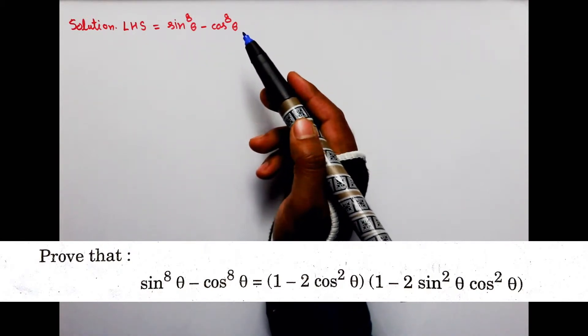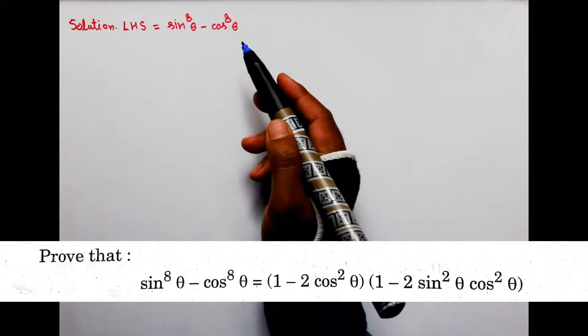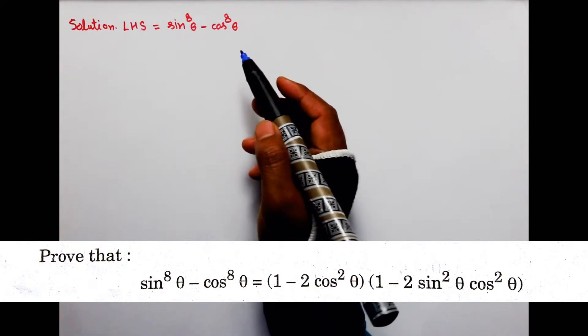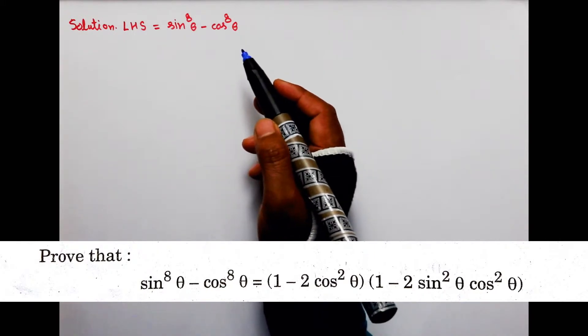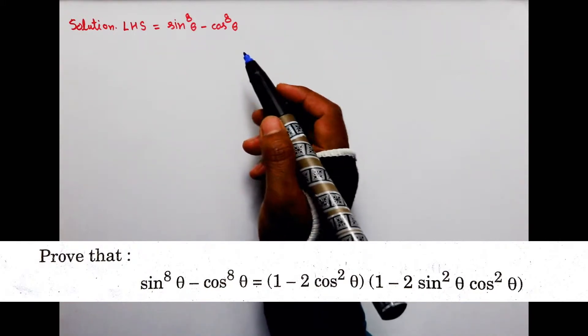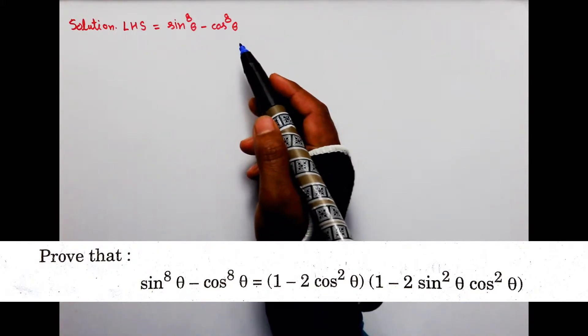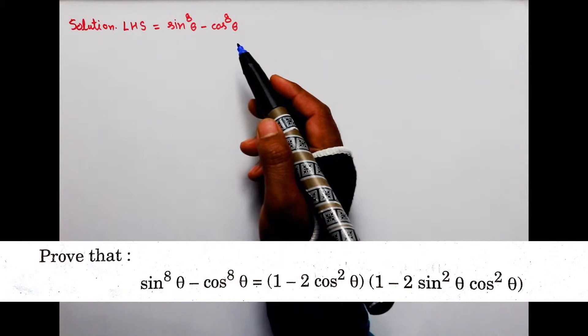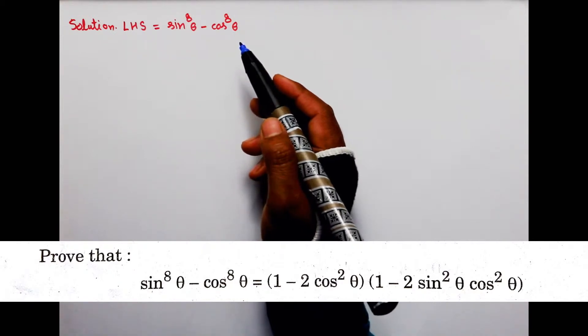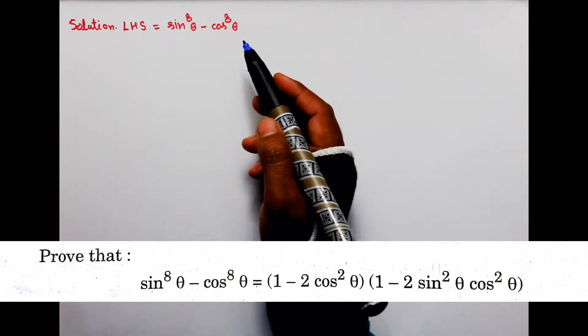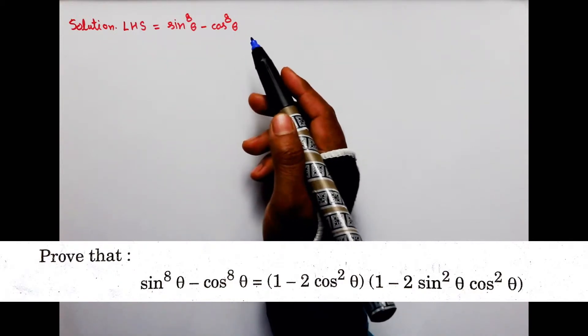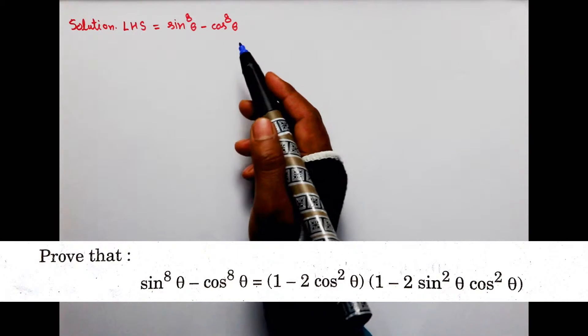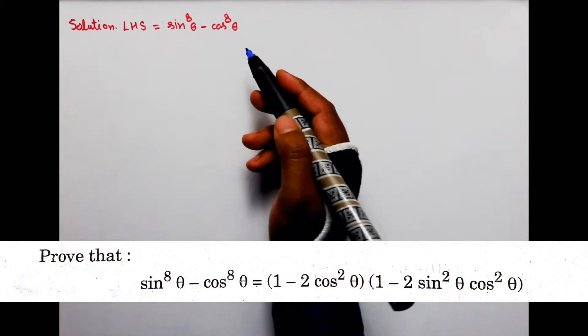Ek toh algebraic identity: a square minus b square = (a minus b)(a plus b). Aur trigonometric identity: sin square theta plus cos square theta is equal to 1. Agar aapko iska gyaan hai toh aasaani se is question ko kar paenge.